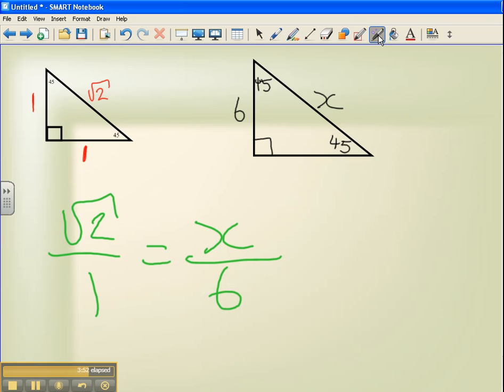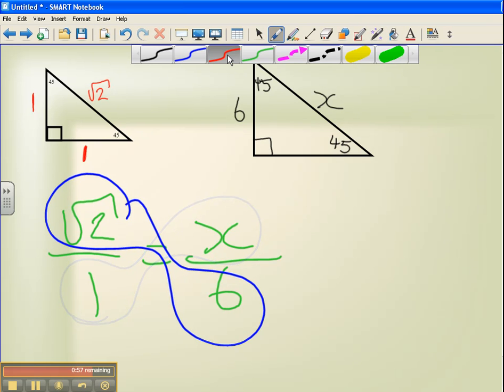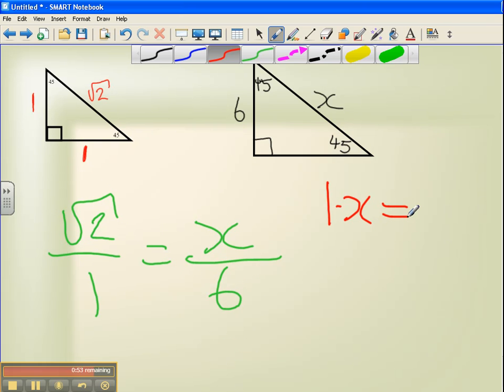Cross multiply the 2. So I end up doing 1 times x and root 2 times 6. Let's do that math. 1 times x equals root 2 times 6. Sense of being x equals 6 root 2. We know that the length of our side is 6 root 2. And that works for any 45-45-90 triangle.